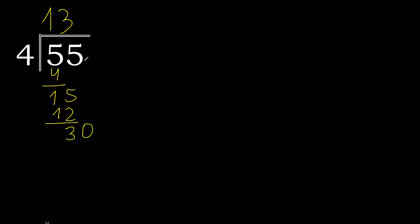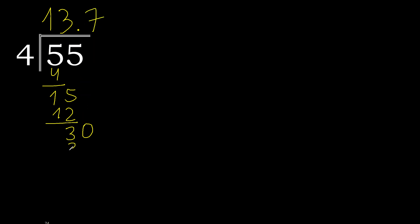Always complete with 0, and place the decimal point here. Bring down: 30. 4 multiplied by 8 is 32 — greater. 4 multiplied by 7 is 28. Subtract: 30 minus 28 is 2. Always complete with 0.